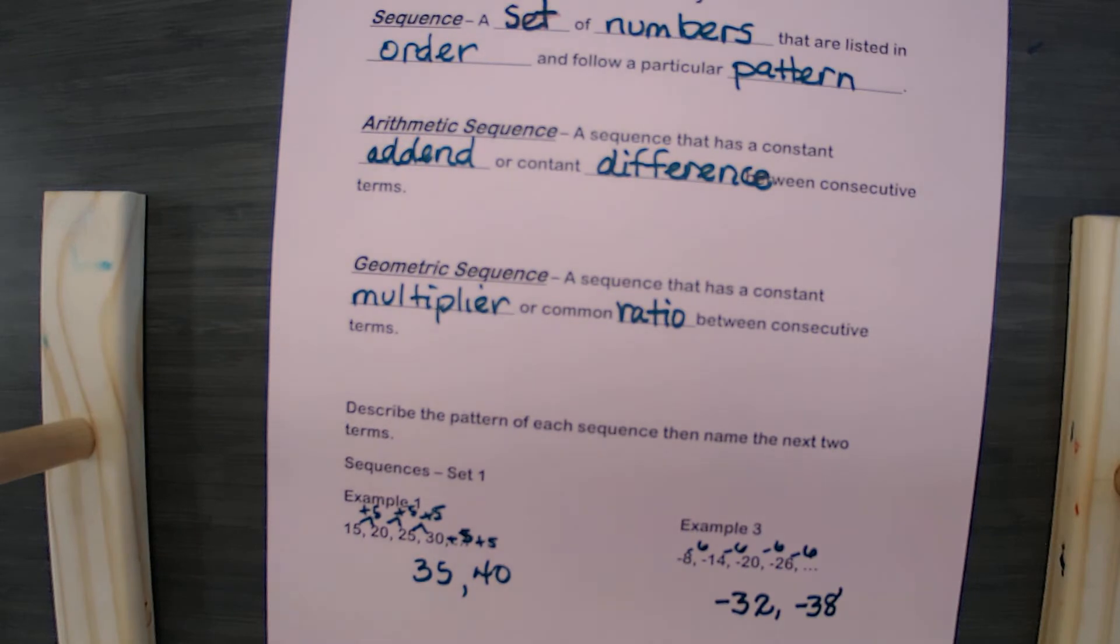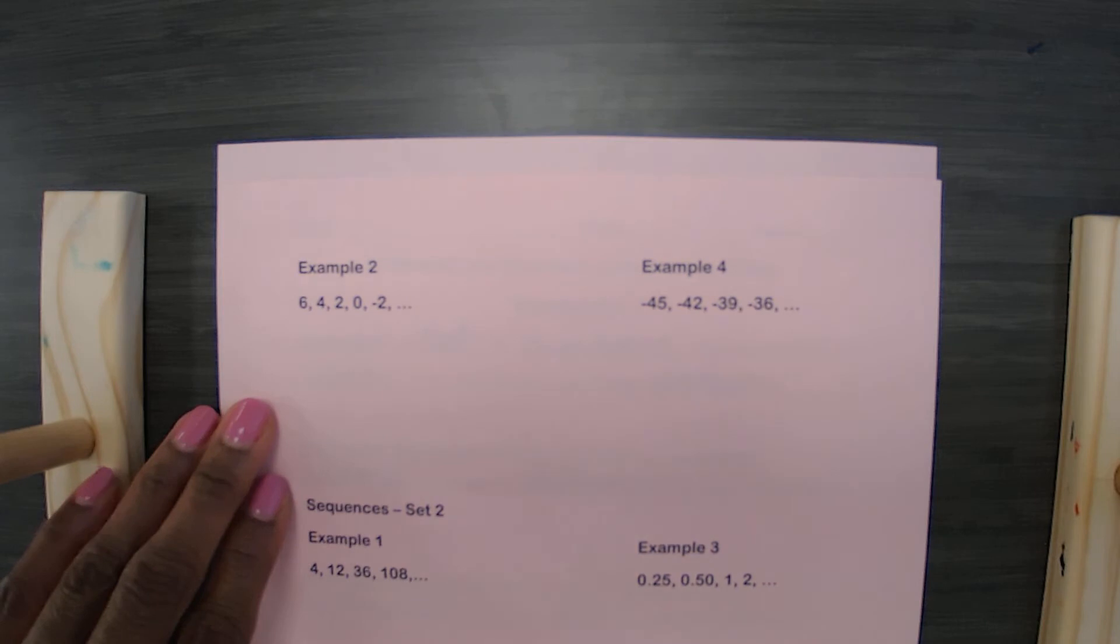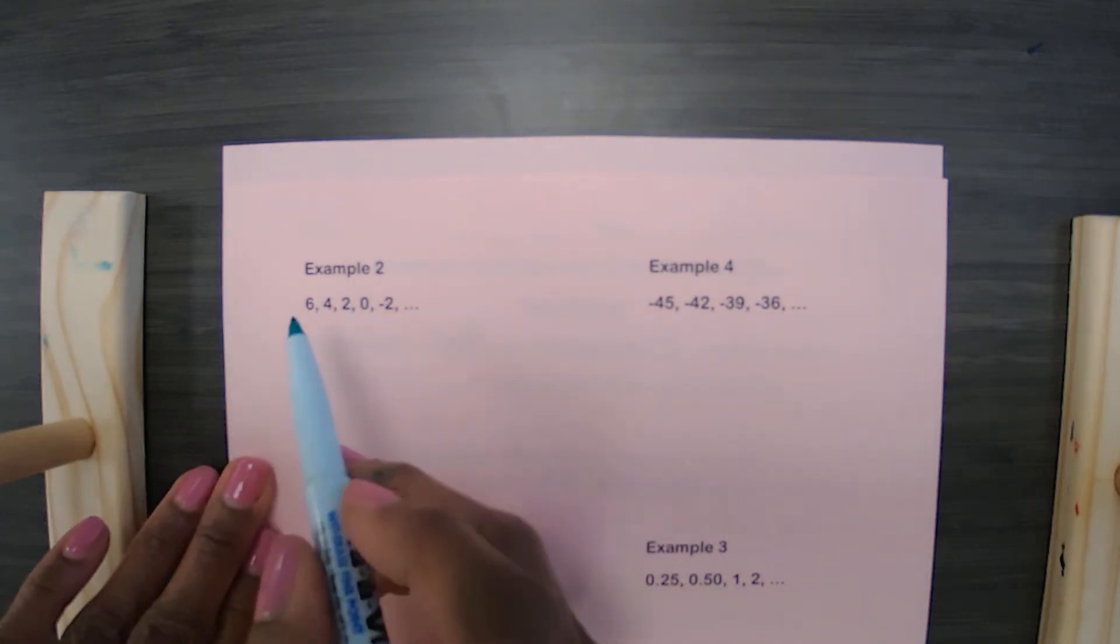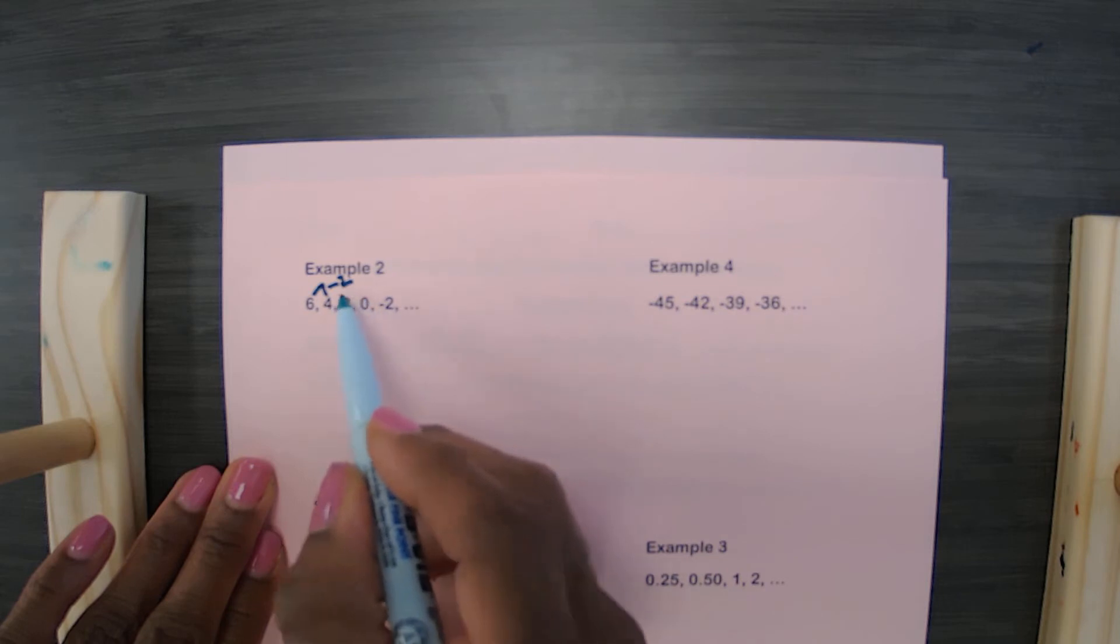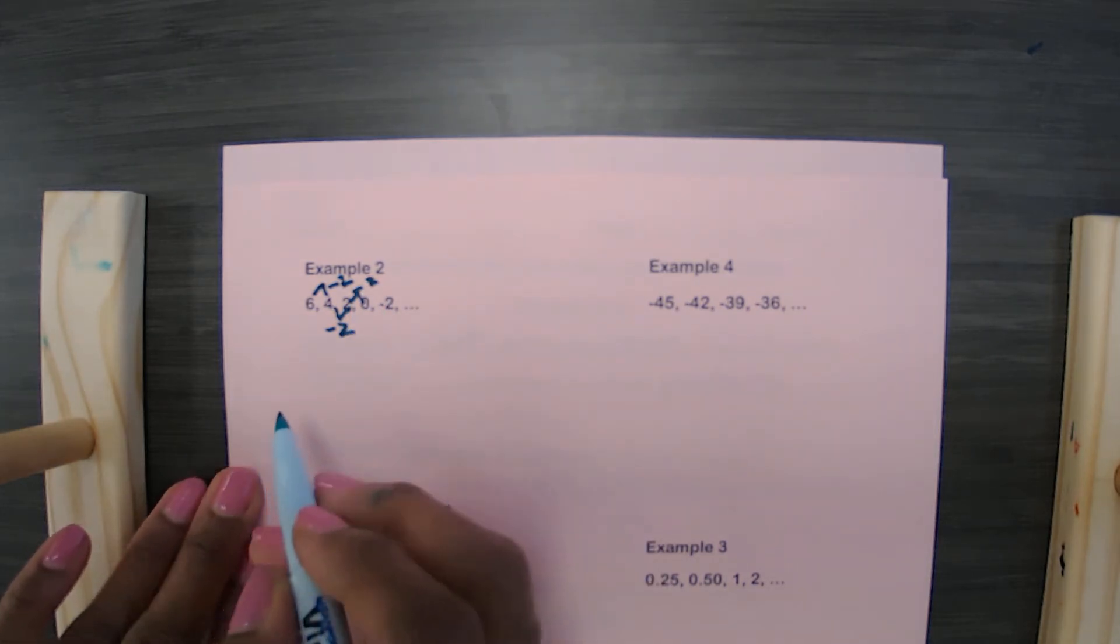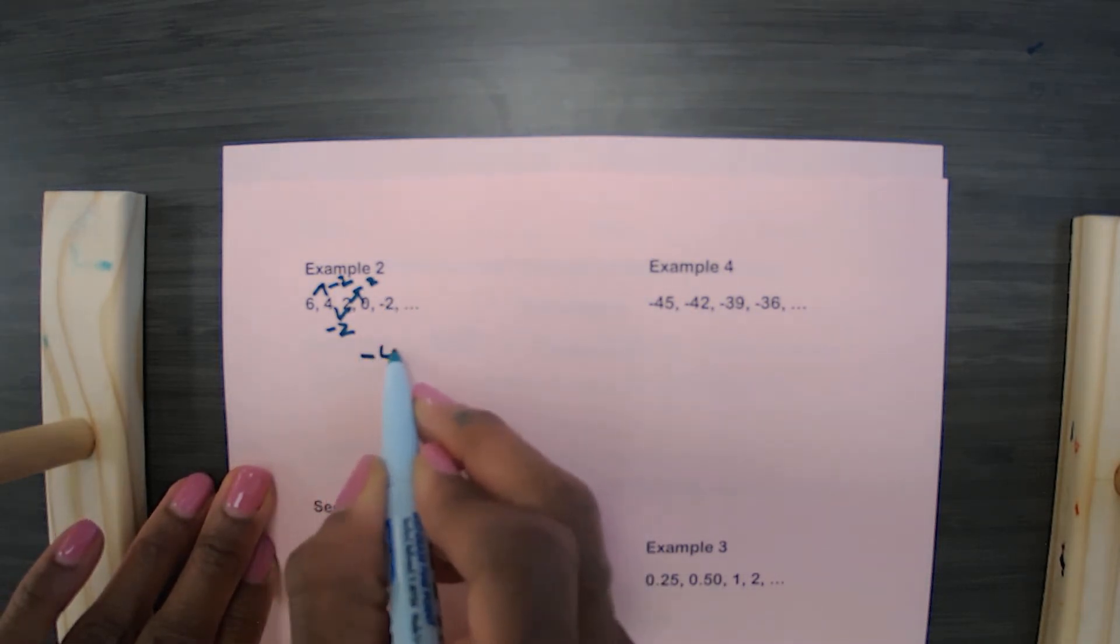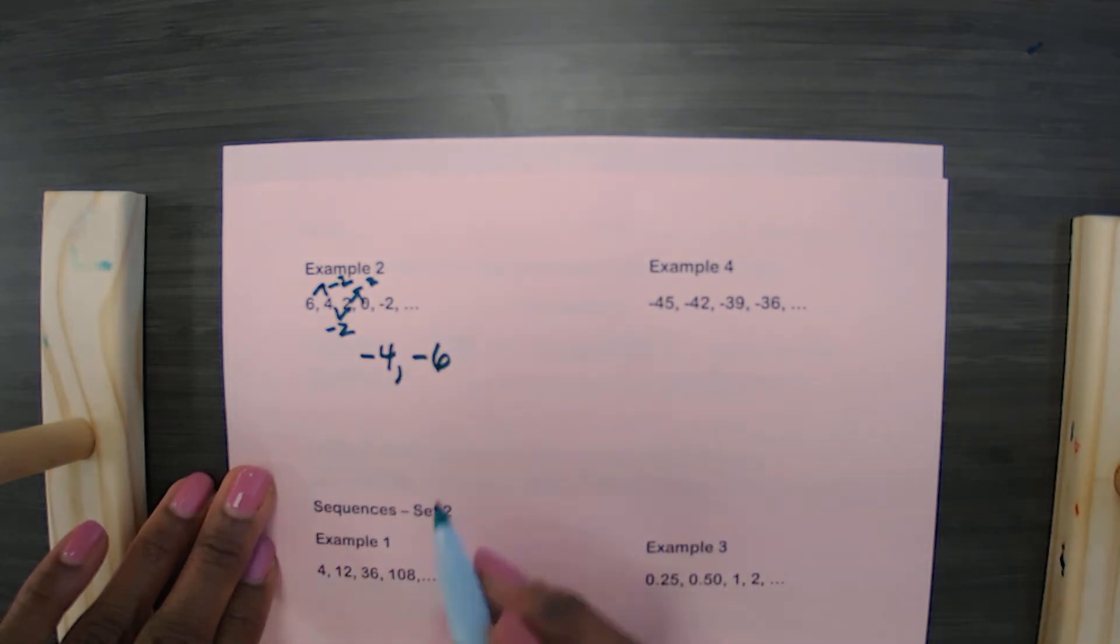Let's look at some more. In this example, let's check. Is it addition or is it subtraction? Well, looks like we're going down by 2 each time. So what I want to do is when I'm here is I'm going to subtract 2 here. I get negative 4. Subtract 2 again and I get negative 6. That's the pattern.